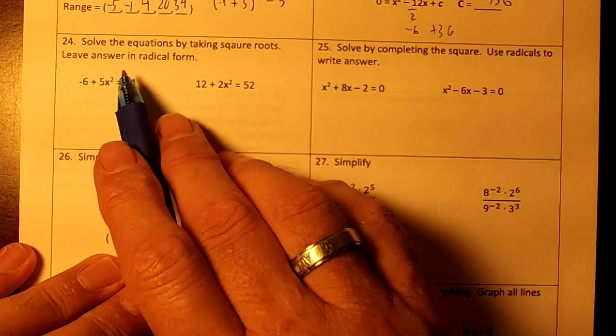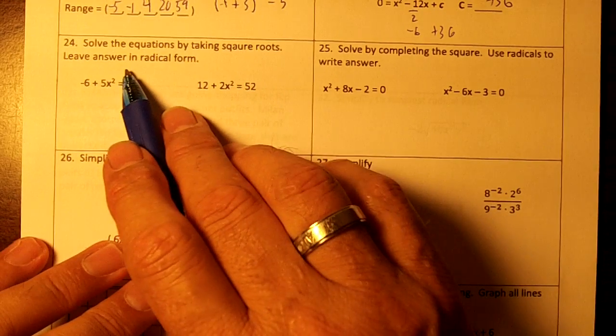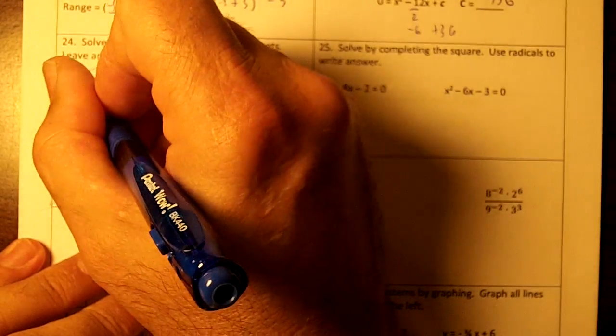Number 24! Solve the equations by taking square roots. Leave the answer in radical form. So on this one we're going to move over the 6.